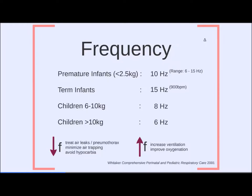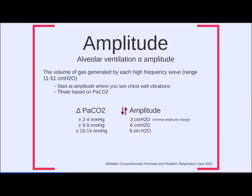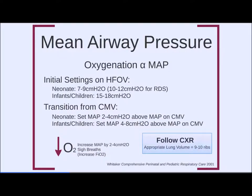Increasing frequency can improve both ventilation and oxygenation. Amplitude is roughly equivalent to alveolar ventilation — the volume of gas generated per frequency cycle — ranging from 11–51 cm H₂O. Start amplitude where you can see chest wall vibrations, then titrate based on PaCO₂. To change PaCO₂ by 2–4 mmHg, adjust amplitude by 3 cm H₂O; for a 5–9 mmHg change adjust by 6 cm H₂O; for 10–14 mmHg change adjust by 9 cm H₂O. Then check blood gas and reassess.